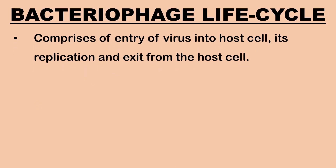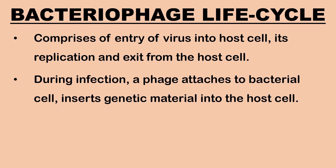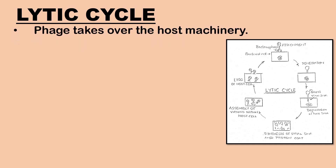Next, we shall look into the life cycle of bacteriophage. The life cycle comprises the entry of the virus into the host cell, its replication, and exit from the host cell. During infection, a phage attaches itself to a bacterial cell and inserts its genetic material into the cell. Then a phage follows any one of two life cycles: lytic or virulent cycle, and lysogenic or non-virulent or temperate cycle.